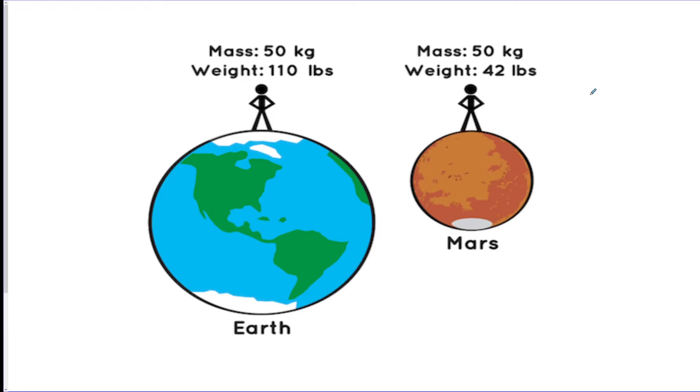This picture sums it up pretty well. The Earth is a bigger planet than Mars, so there's more gravity on Earth. A person with a mass of 50 kilograms would weigh about 110 pounds on Earth, but if they were to get in a rocket ship and travel to Mars, they would still be 50 kilograms mass because they're still the same person.